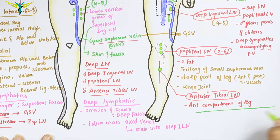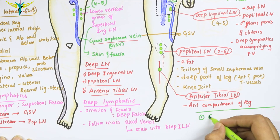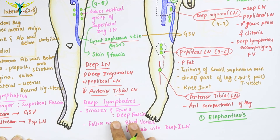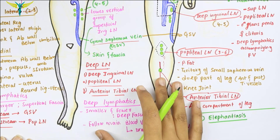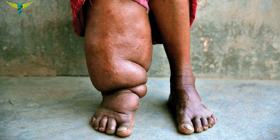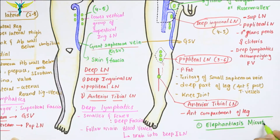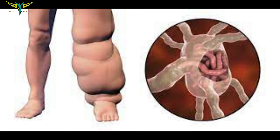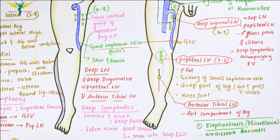Coming to the clinical correlation: elephantiasis is caused when the lymphatic vessels of the lower limb are blocked by the microfilarial parasites, that is Wuchereria bancrofti. This causes massive edema of the lower limb, which produces a clinical condition called elephantiasis. In this condition, hypertrophy of the skin and the subcutaneous tissue is seen.